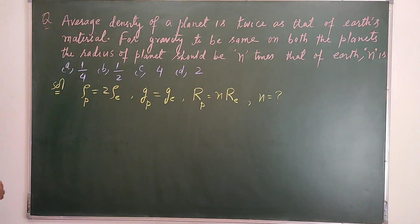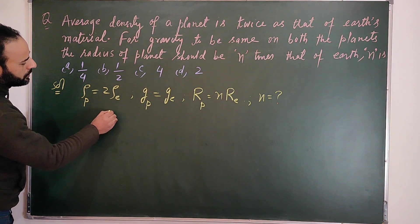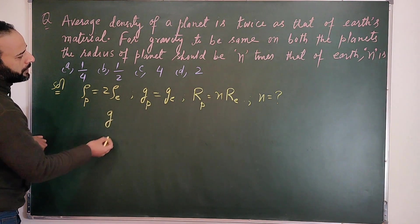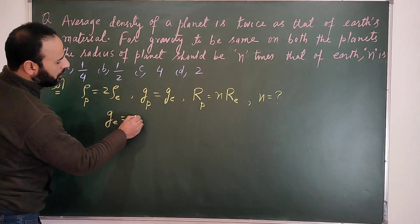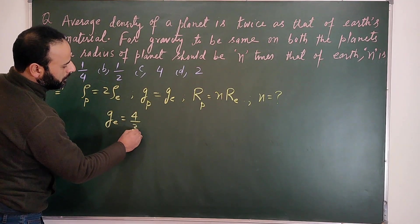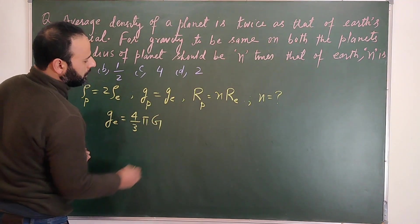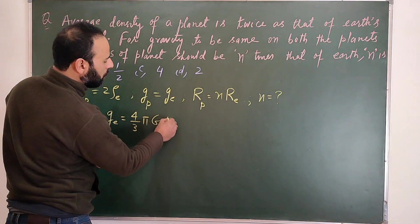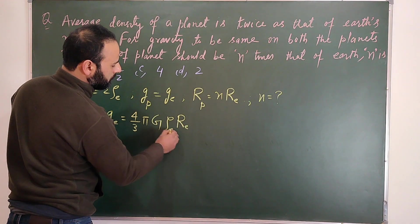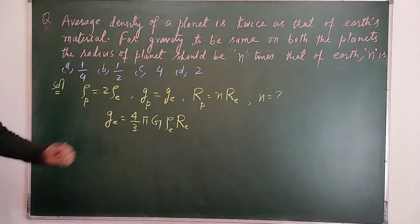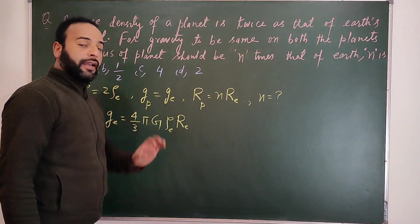The acceleration due to gravity on the surface of Earth in terms of density is: g = (4/3) π G ρ R_e. So in terms of density and radius, the acceleration due to gravity is expressed this way.